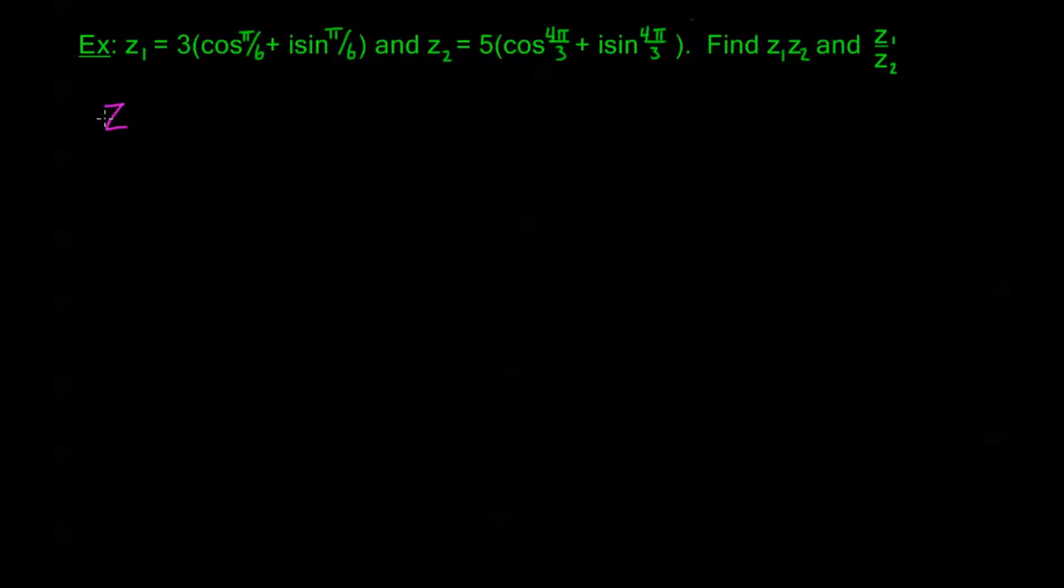So Z₁ times Z₂—from our formula, we know our new modulus is the product of the two moduli. So this is r₁, which is 3, times r₂, which is 5. Then I have cosine, and my argument is the sum of the arguments of Z₁ and Z₂, so this is π/6 plus 4π/3, plus i sin(π/6 + 4π/3).